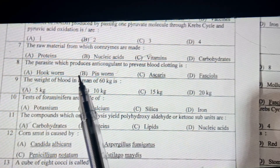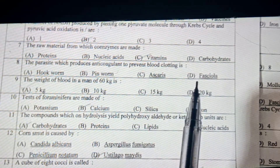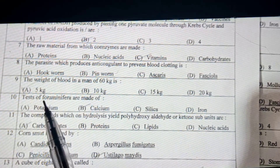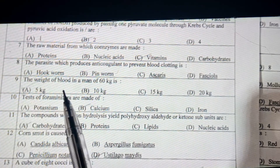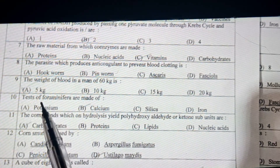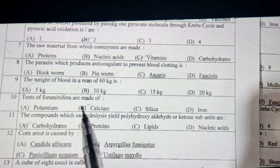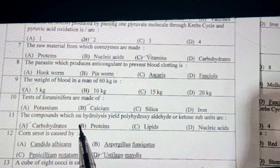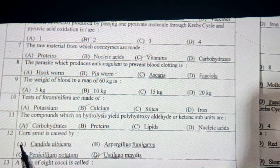The parasite which produces anticoagulant to prevent blood clotting — the weight of blood in a 60 kg man is 5 kg. Foraminifera is made up of calcium. The compounds which on hydrolysis yield polyhydroxy aldehyde or ketone subunits are carbohydrates.